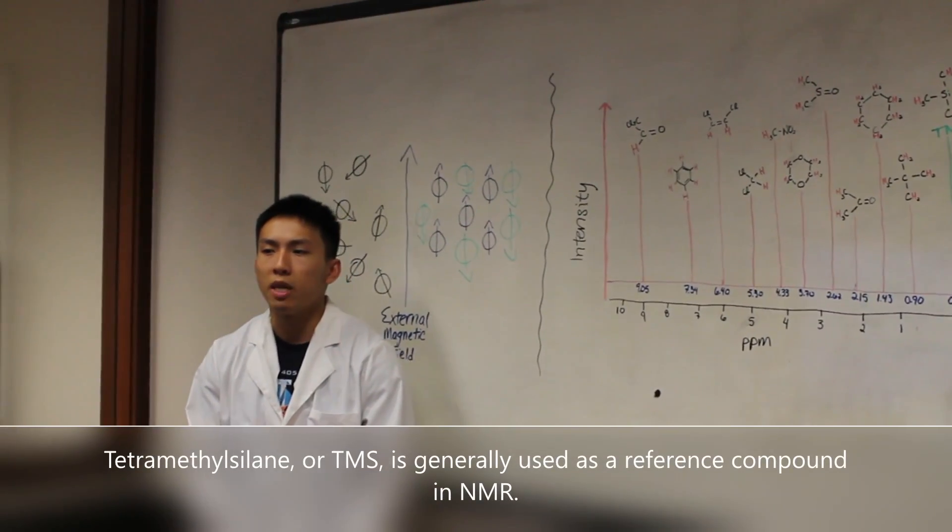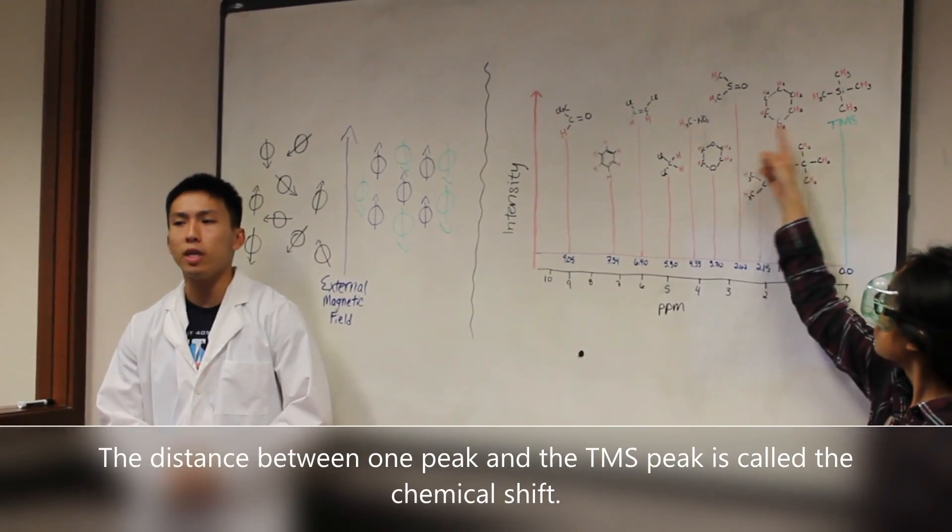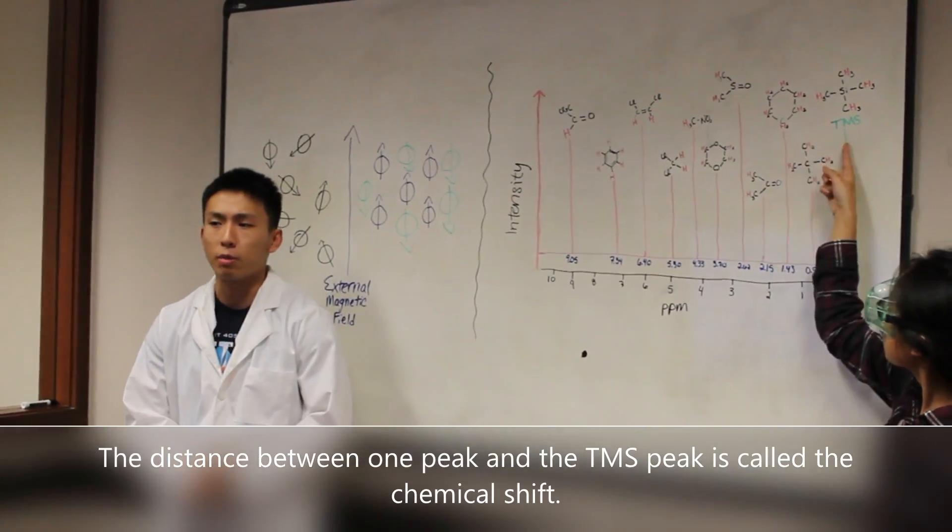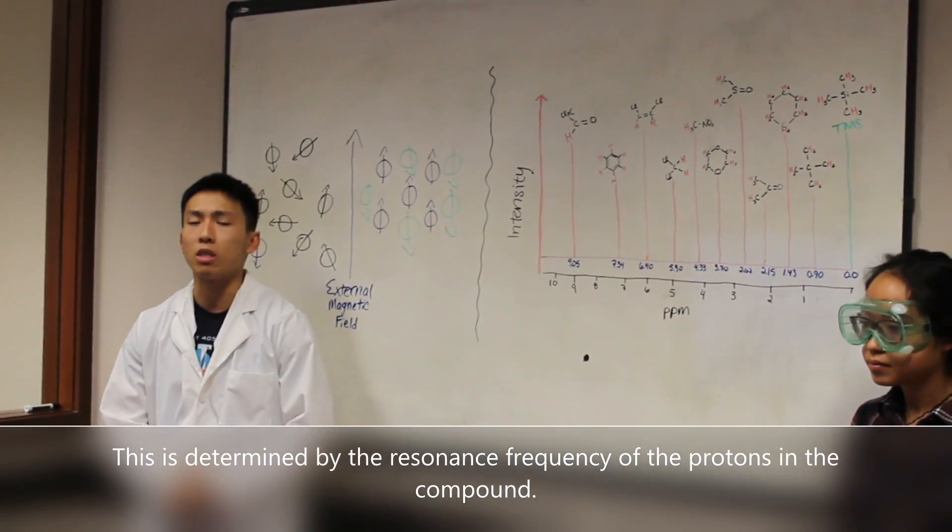Tetramethylsilane, or TMS, is generally used as a reference compound in NMR. The distance between one peak and the TMS peak is called a chemical shift. This is determined by the resonance frequency of the protons in the compound.